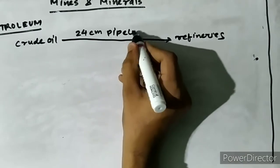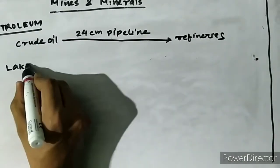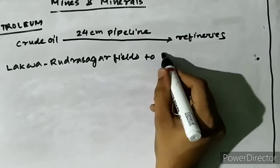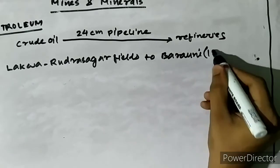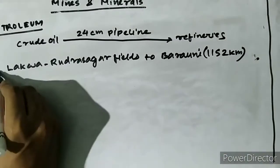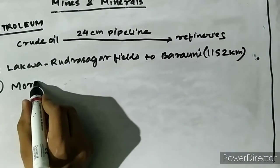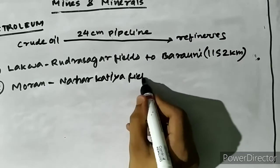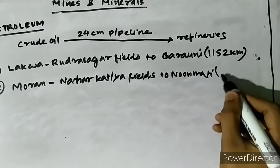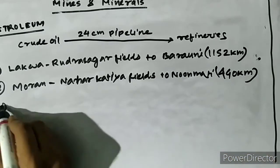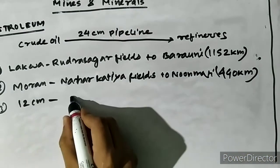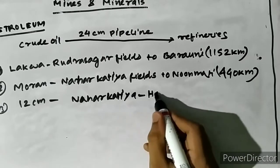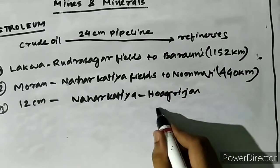The crude oil extracted from oil fields is transferred to refineries through 24 cm diameter pipelines. These pipelines include Lakwa-Rudrasagar field to Baroni, which is 1152 km long; Moran-Naharkotia fields to Nunmati, which is 440 km long; and to Bongaigaon, which is 600 km long. Similarly, 12 cm pipes have been placed from Naharkotia-Hugrijan fields to Digboi.